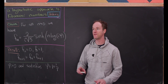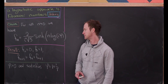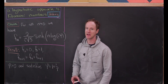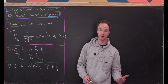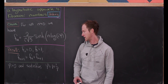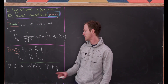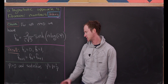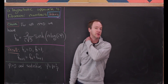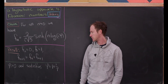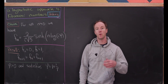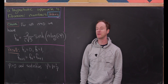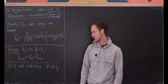Let's recall how the Fibonacci numbers are defined. I'll take the following two seeds: F₀ is 0, F₁ is 1, and then we have the familiar two-step recursion. So Fₙ₊₂ is Fₙ plus Fₙ₊₁ — one term is equal to the sum of the previous two terms.